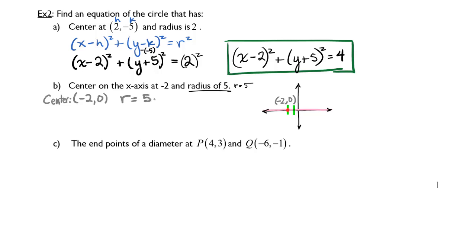With radius equal to 5, therefore r squared equals 25, and I have everything I need to write the equation: x plus 2 quantity squared plus y minus 0, so I just have y squared equals 25. Done.